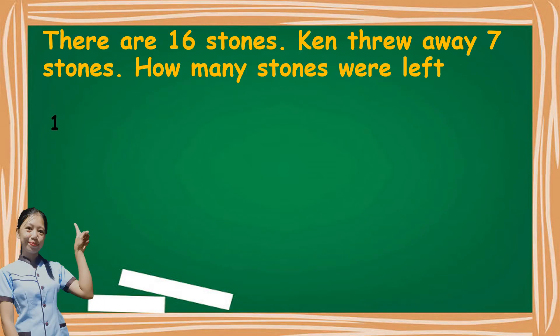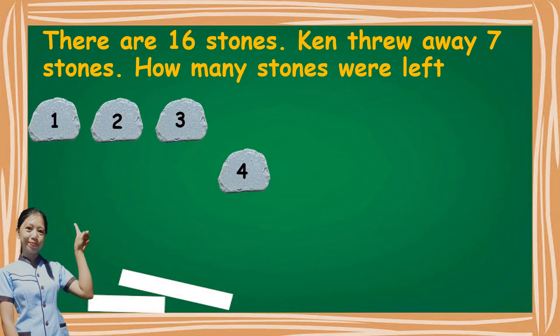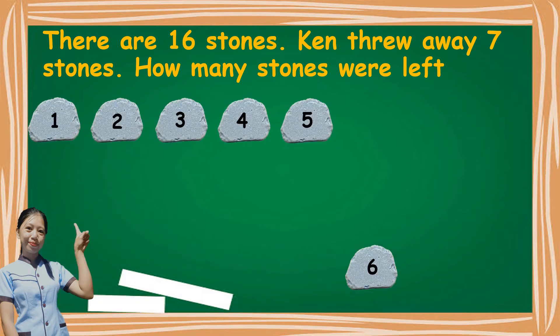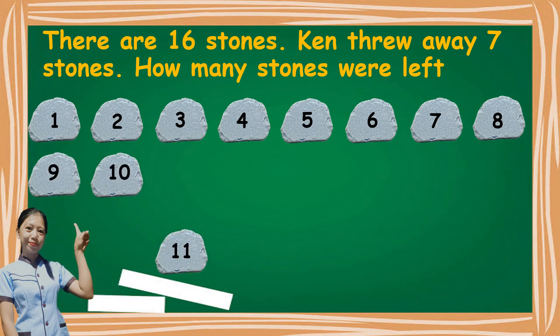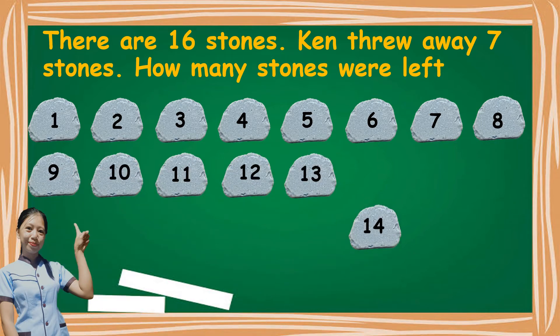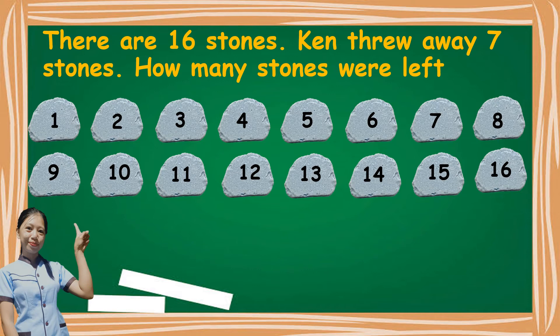So, there are sixteen stones. Ken threw away seven stones. How many stones were left? So, how many stones are there in all? Yes, there are sixteen. And how many stones were thrown away? Yes, there are seven stones.